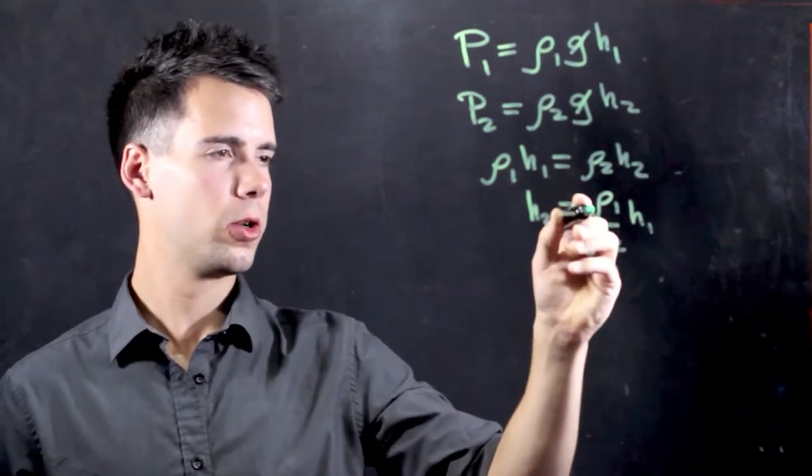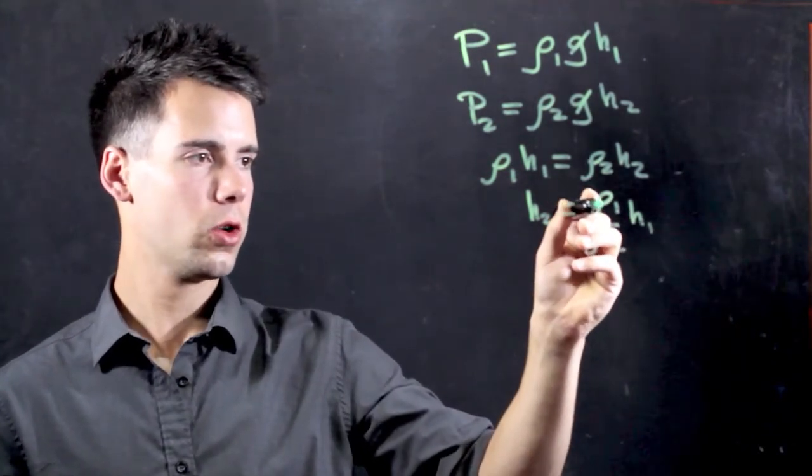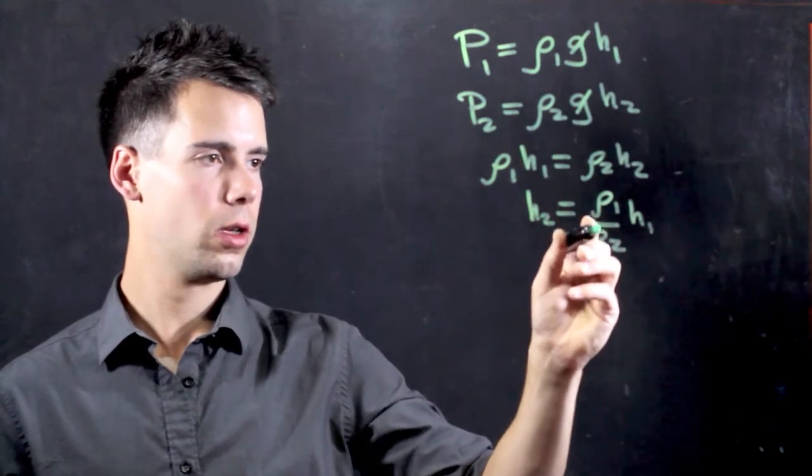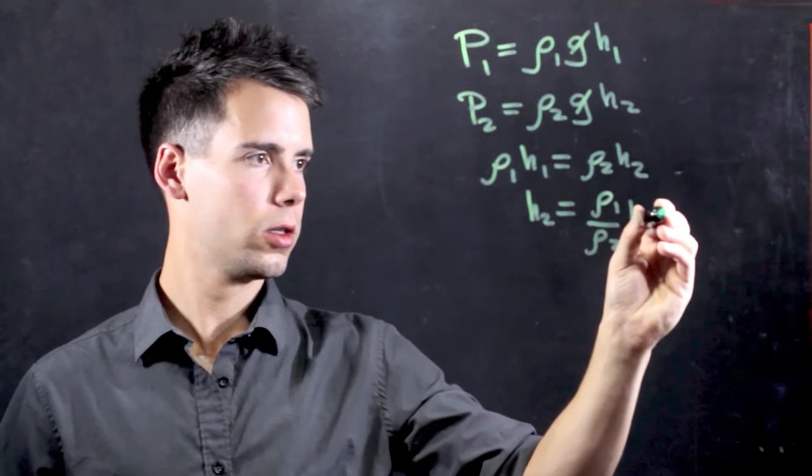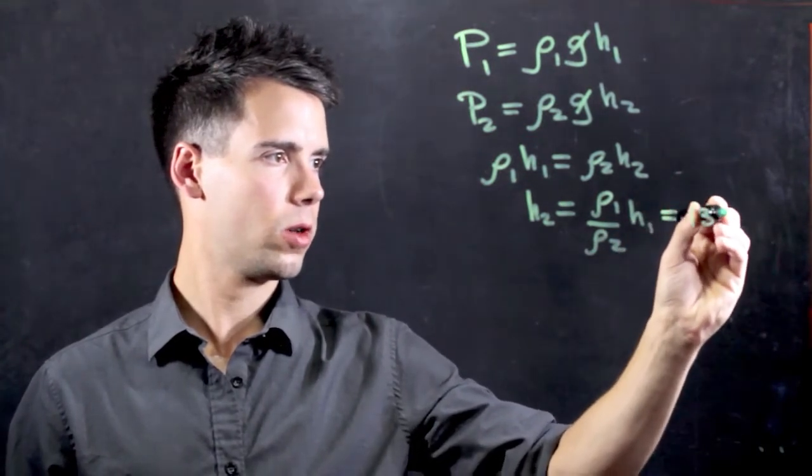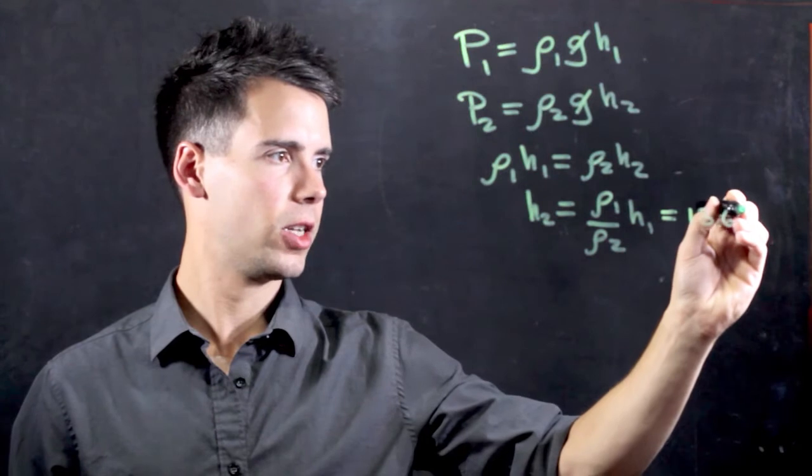Now, Rho1 over Rho2 is simply the density of Mercury to the density of water. It happens to be about 13.6. So, we can say this is equal to 13.6 times H1.